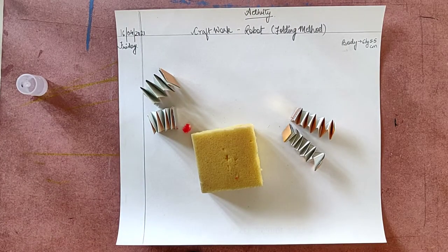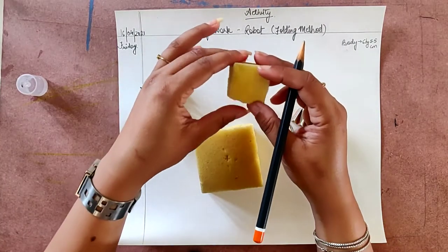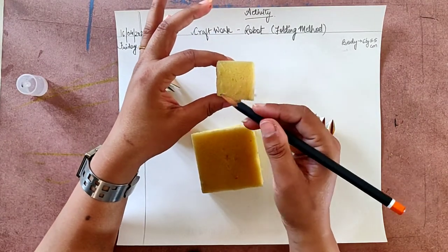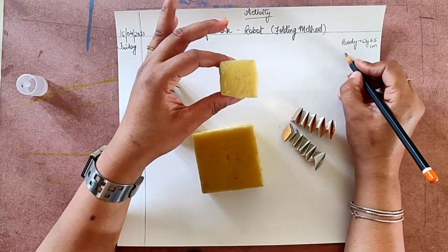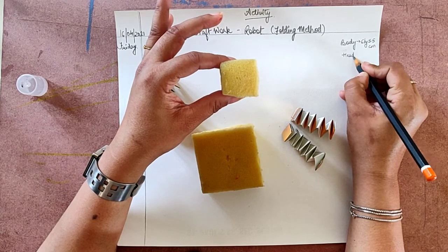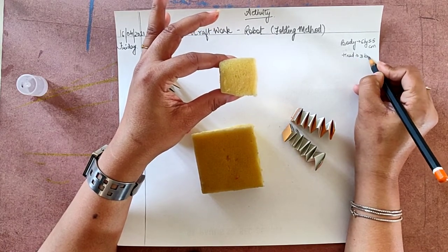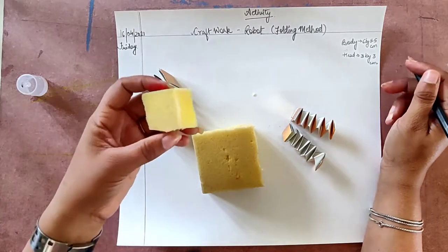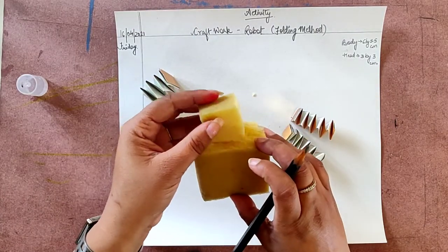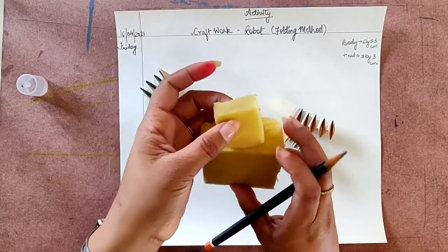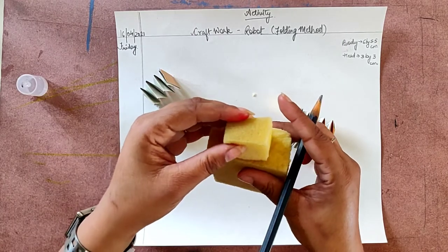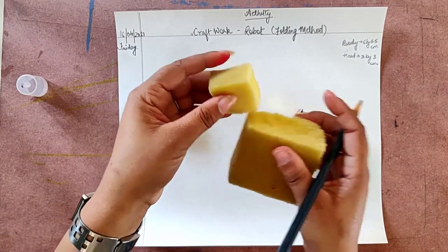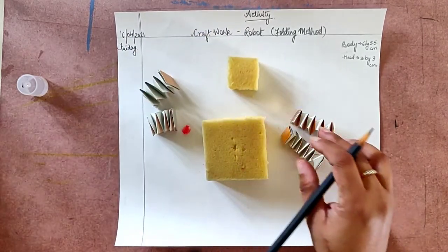Next comes the head part. See, the sponge. The size of this is 3 by 3 cm. Now, what we are going to do? We are going to paste them together. This one.